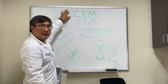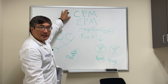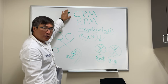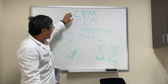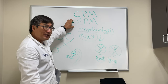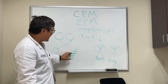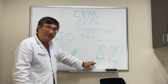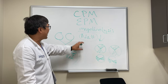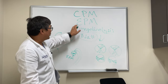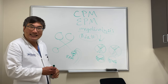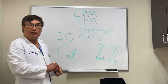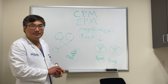Central pontine myelinolysis is the efferent, motor version - that's going to be horizontal gaze palsy. So the combination of loss of vision with a bilateral hourglass or pac-man field from geniculate involvement, plus horizontal gaze palsy, should suggest that you're dealing with myelinolysis - either central pontine or extra pontine.